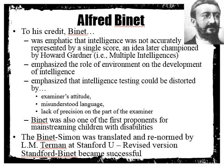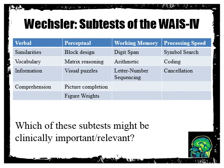The Binet-Simon test was later translated and re-normed in the U.S. by Lewis Terman at Stanford University, and the revised version, the Stanford-Binet, became quite successful and is still used today. We've talked about the history of intelligence assessment; it's now important to look at perhaps the most commonly used form of intelligence testing — the Wechsler scales.